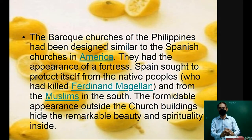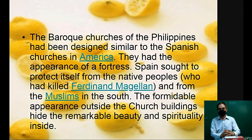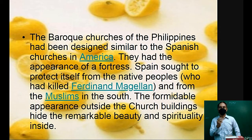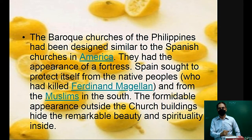The Baroque churches of the Philippines had been designed similar to Spanish churches in America. They had the appearance of a fortress — Spain sought to protect itself from native people who had killed Ferdinand Magellan, and from the Muslims in the south. The formidable appearance outside the church building contrasts with the remarkable beauty and spirituality inside.